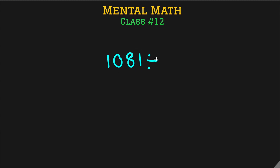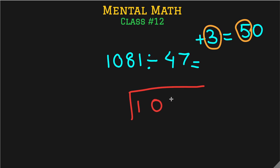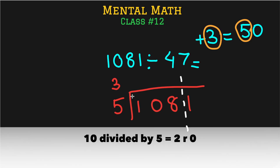Let's do another question: 1081 divided by 47. We make 47 a multiple of 10 by adding 3, giving 50. The new divisor is 5 and the multiplier is 3. We set up 1081 divided by 5 with multiplier 3 and a remainder area. Starting: 1 is too small to be divided by 5, so we consider 10 as a whole. 10 divided by 5 is 2 with no remainder.